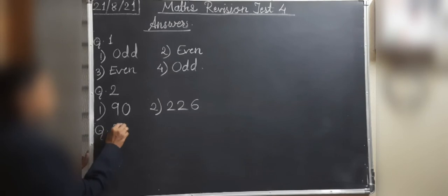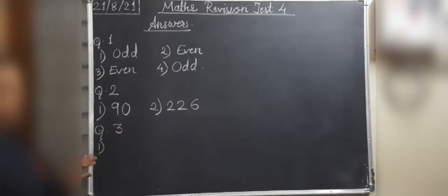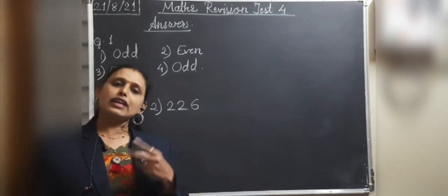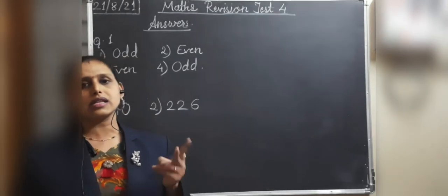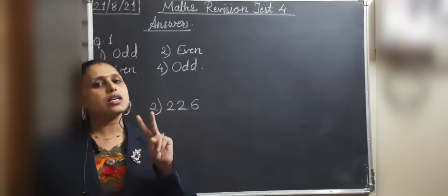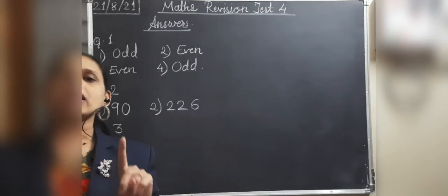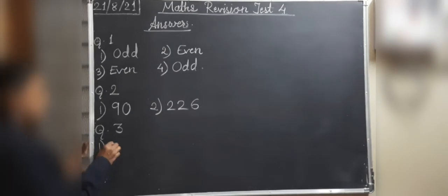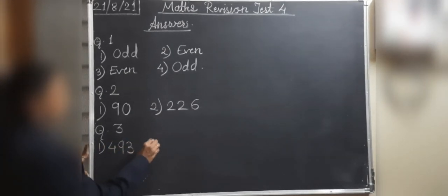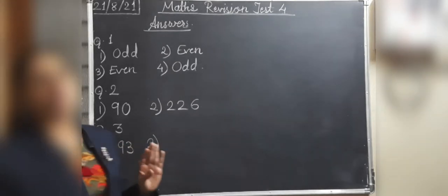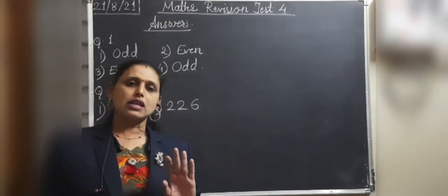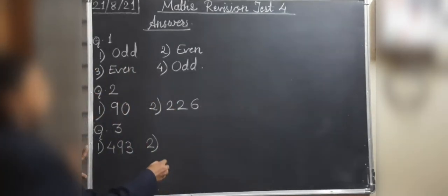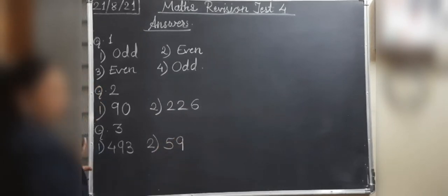Question 3 answers: Next odd number. First number is 491 — add 2: 492, 493 — so the answer is 493. Second number is 57 — count 2 forward: 58, 59 — so 59 is your next odd number.